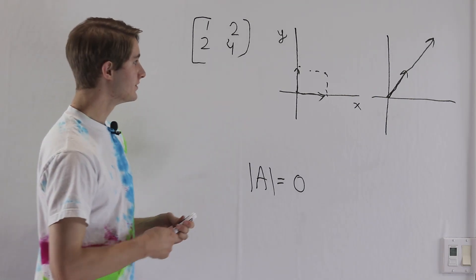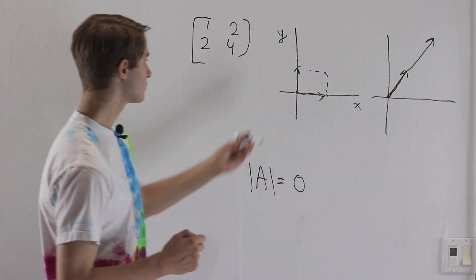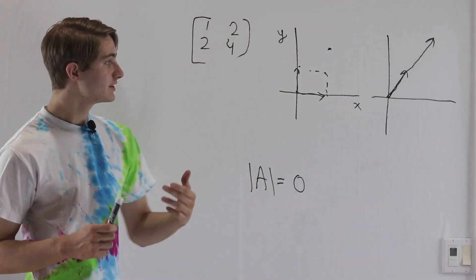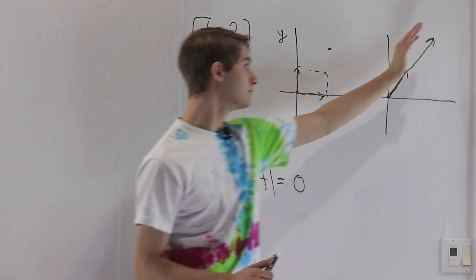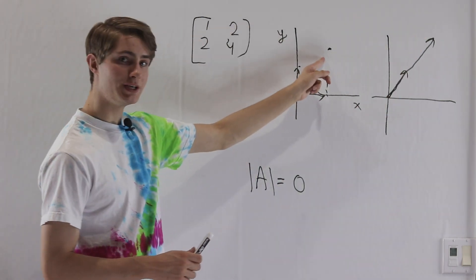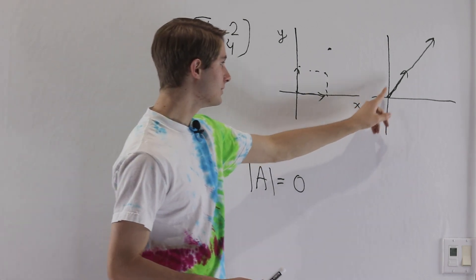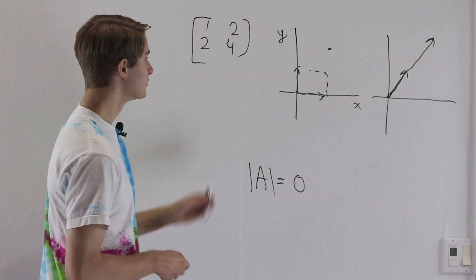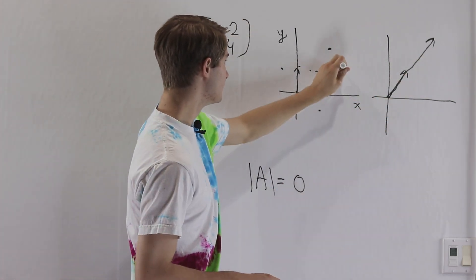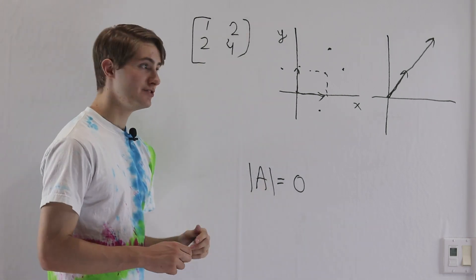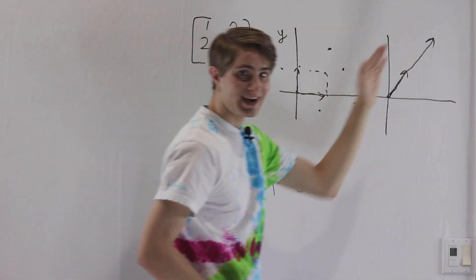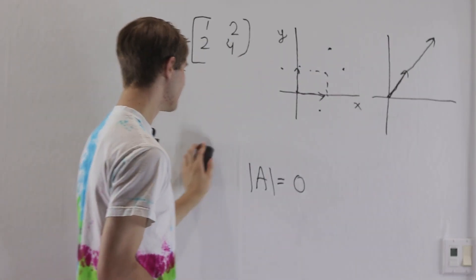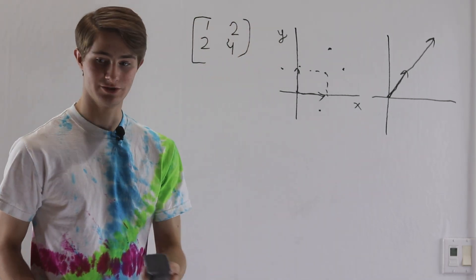Now, the important thing here is that every single point in the XY plane — like the point (1,2) — can be written as a linear combination of these two vectors that both end up on the same line. Which means that this point is also going to end up being on the same line, because it's going to end up being a linear combination of our two output vectors. So no matter what point we choose in the entire XY plane, if our determinant is zero, it's going to get squished down onto the exact same line. So what does that have to do with inverses?